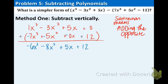So, we get this polynomial as our simpler form: negative 6x to the third minus 8x squared plus 5x plus 12.